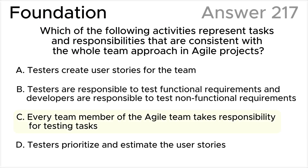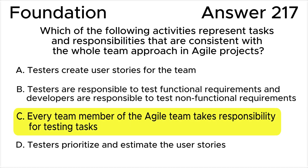The correct answer is C. Every team member of the agile team takes responsibility for testing tasks, according to the ISTQB syllabus. Quality is everyone's responsibility, and all team members should work together to ensure that the desired quality levels are achieved.